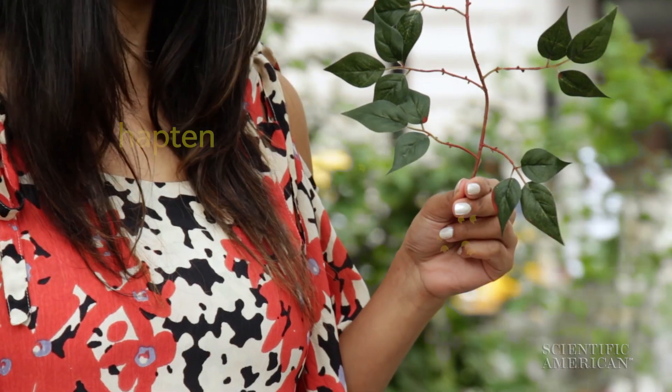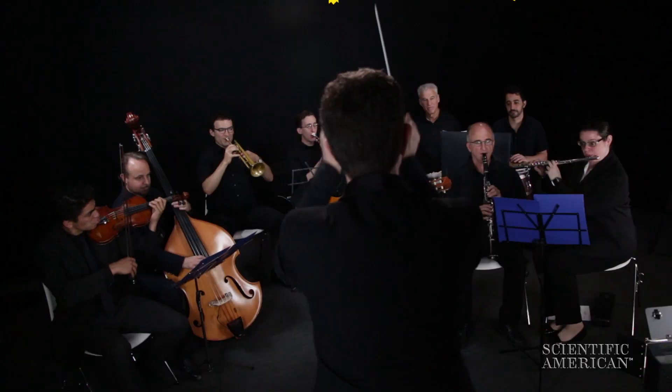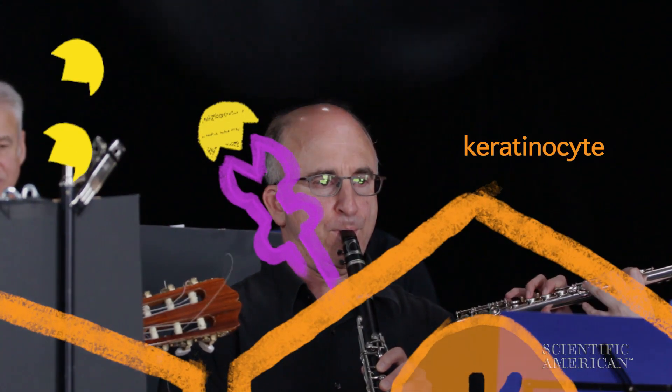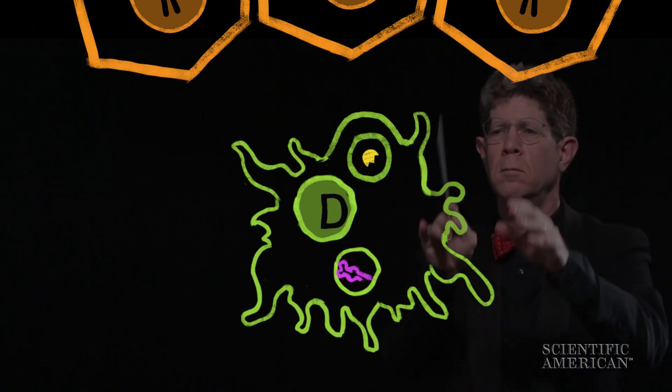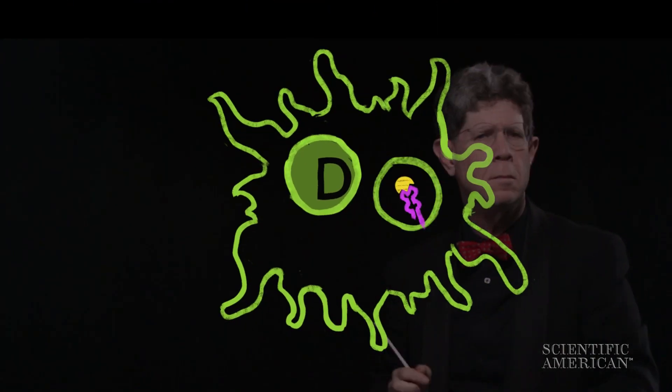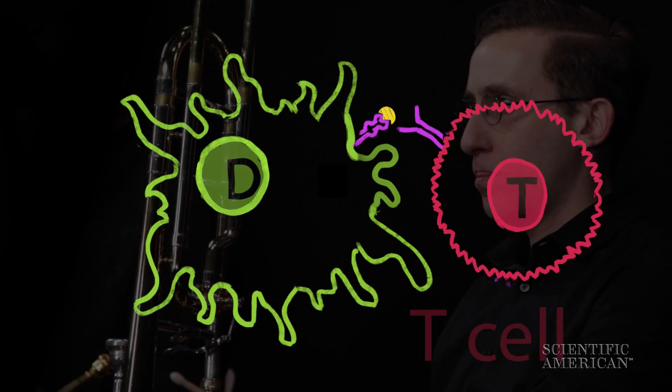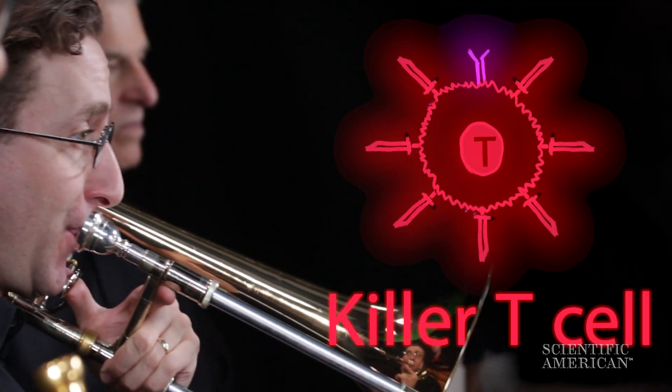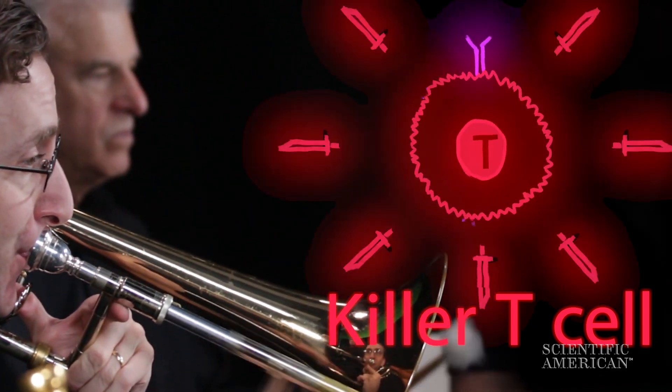These allergens contain small molecules called haptens that bind to immune system proteins on skin cells. If a dendritic cell marks this allergen as dangerous, it recruits a T cell into a new deadly program. The T cell becomes a killer T cell, a white blood cell armed with cytotoxins to blast an invader.